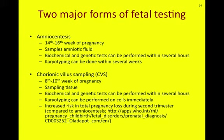Biochemical and genetic tests from CVS can be performed within several hours, similar to amniocentesis. The main difference is that karyotyping — looking at the staining patterns of chromosomes — can be performed on the cells immediately, because there is a high density of cells in the chorionic villus. This means you can know the chromosomal results a lot sooner.